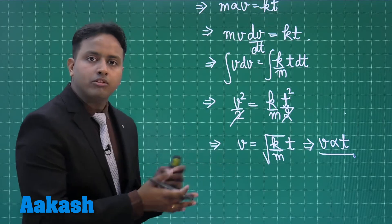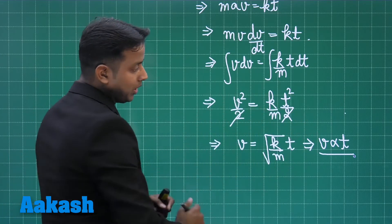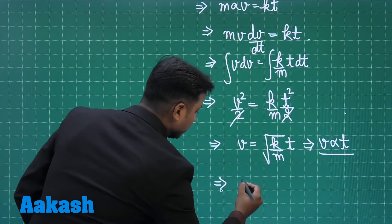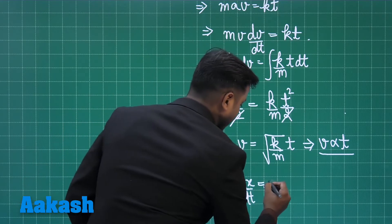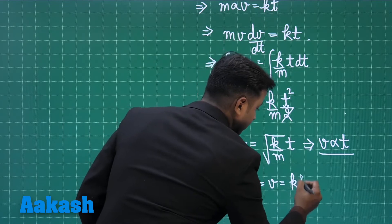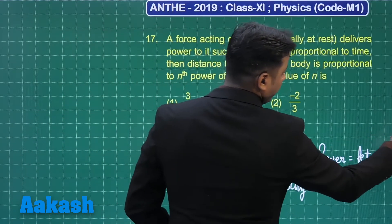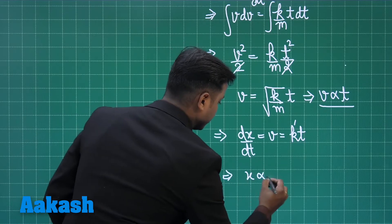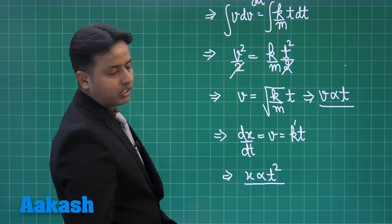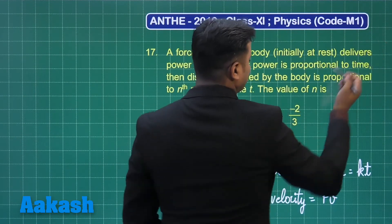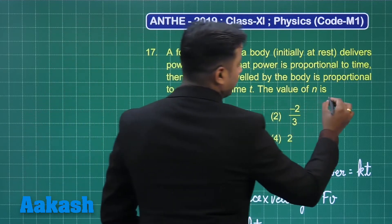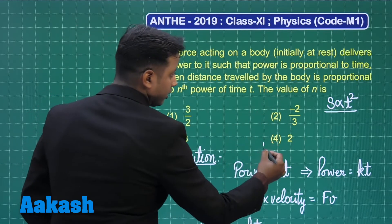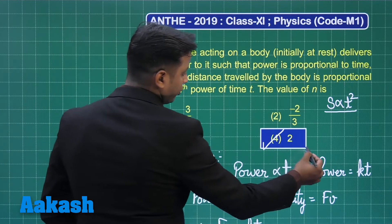Whenever velocity is proportional to t with power 1, displacement is proportional to t². We know velocity is ds/dt = k't, so integrating further gives x directly proportional to t². The displacement depends on t squared, so the power n equals 2.